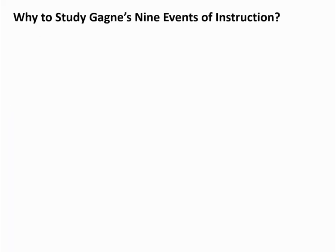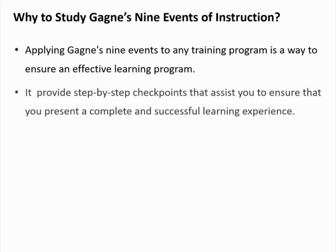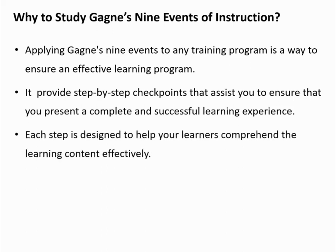What's the need to study Gagné's 9 events of instruction? Applying Gagné's 9 step model to any training program is a way to ensure an effective learning program. It provides step-by-step checkpoints that assist you to ensure that you present a complete and successful learning experience. Each step is designed to help your learners comprehend the learning content effectively.